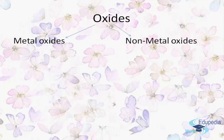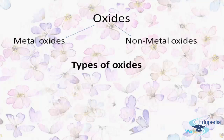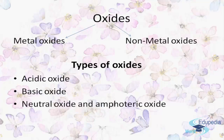Oxides can be both metallic or non-metallic, that is they can be metal oxides or non-metal oxides, which can be further divided into acidic oxides, basic oxides, neutral oxides, and amphoteric oxides. Let's understand all these types of oxides one by one in detail.